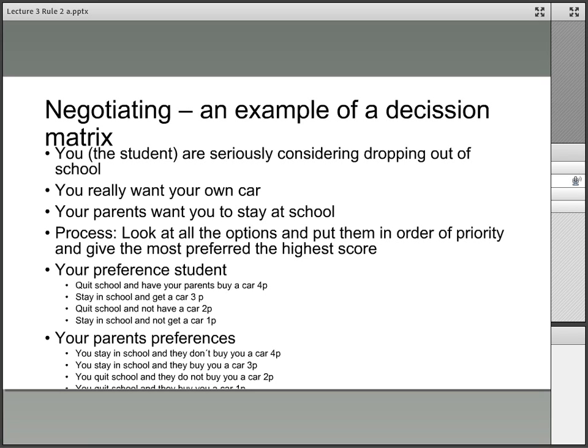Once you have two options from both parties, put them in order of preference. As the student, your best option gets the highest points: quit school and parents buy a car—4 points. Second: stay in school and get a car—3 points. Third: quit school and no car—2 points. Worst: stay in school and no car—1 point.